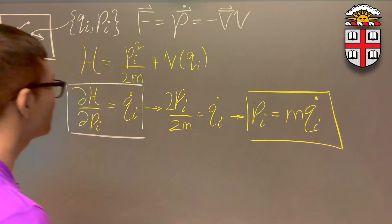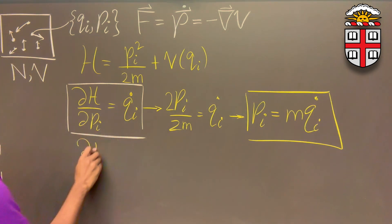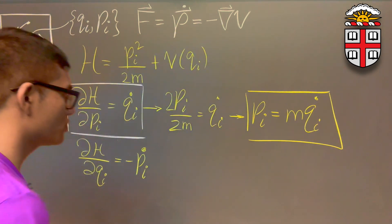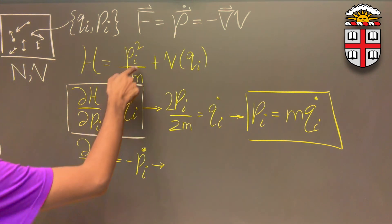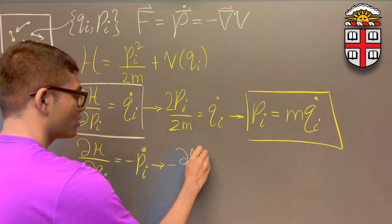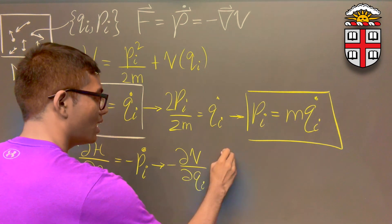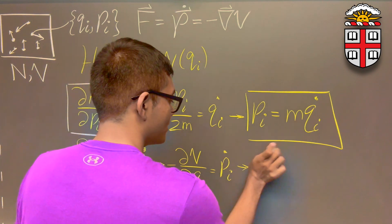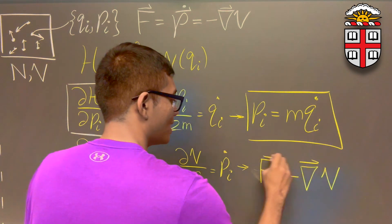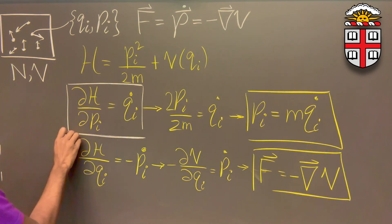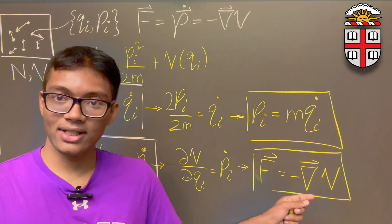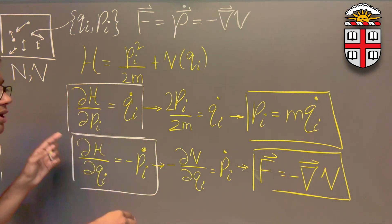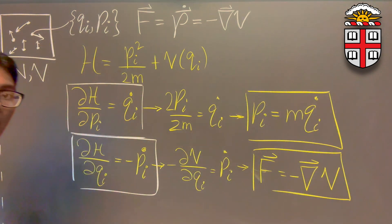The second equation we're going to be mindful of is as follows. If I now switch up the momentum and coordinates, I get partial H partial Q sub i is minus P sub i dot. Moving the minus sign to the other side and taking the derivative of this Hamiltonian, we get minus partial V partial Q sub i is equal to P sub i dot. But P sub i dot is force, and minus partial V partial Q sub i is the negative gradient of the potential. So we have reproduced our two well-known equations of classical mechanics from the Hamiltonian.